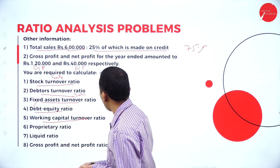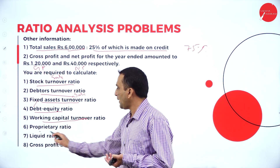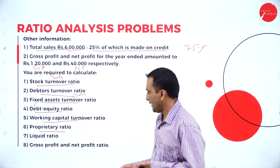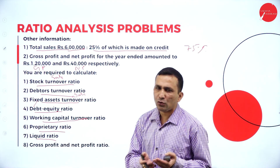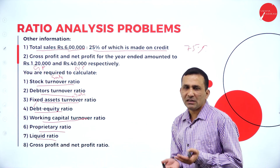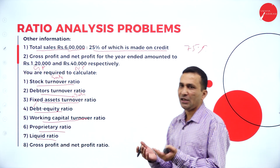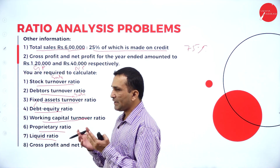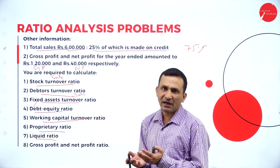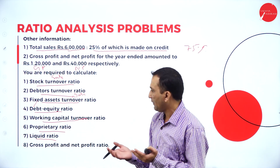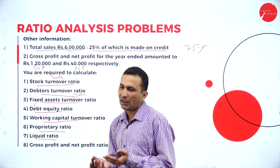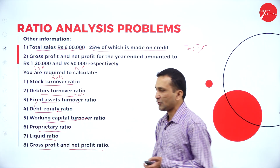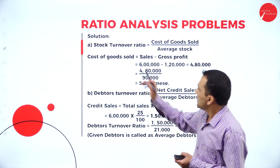Working capital turnover uses net sales divided by working capital. Proprietary ratio is shareholders-related. Liquidity ratio shows the liquidity position: current assets minus stock minus prepaid expense, divided by current liability. Last one: gross profit and net profit ratio.